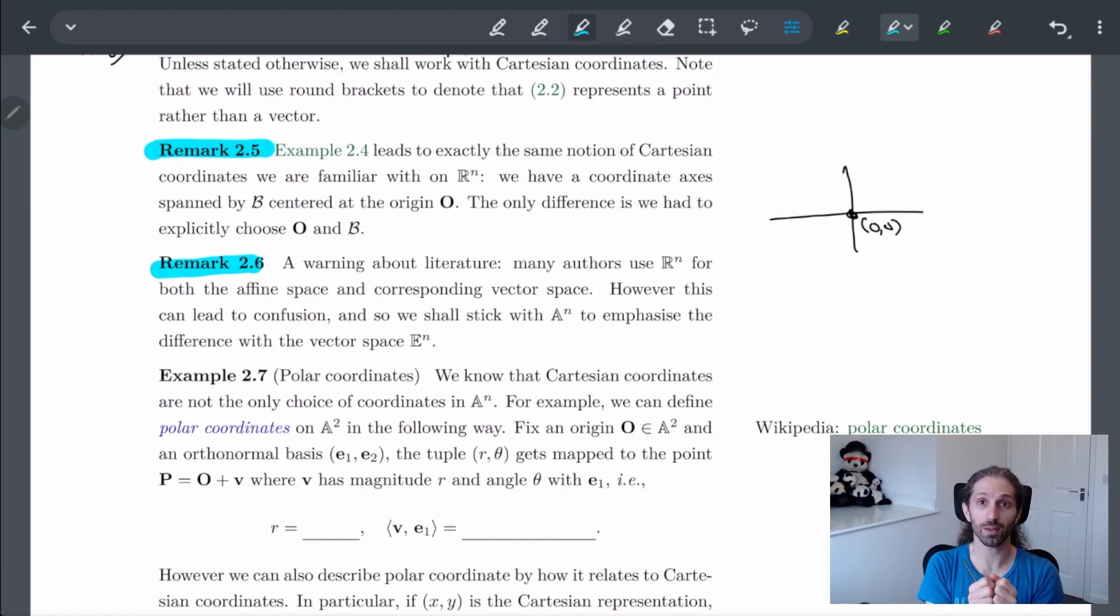So in some sense being able to separate them and say these are the points, these are the vectors, and 𝔸ⁿ different than ℝⁿ actually helps. So this is why we're going to stick to this way of doing things.